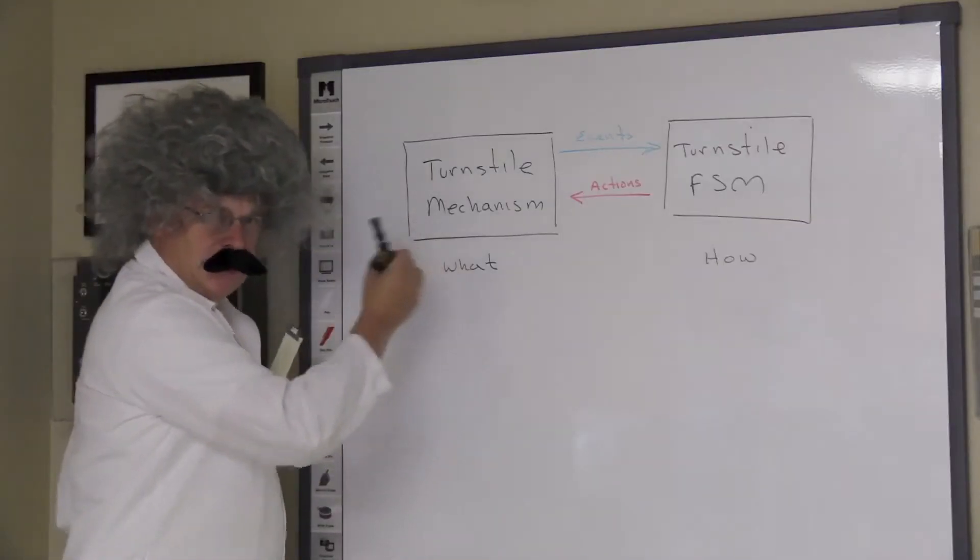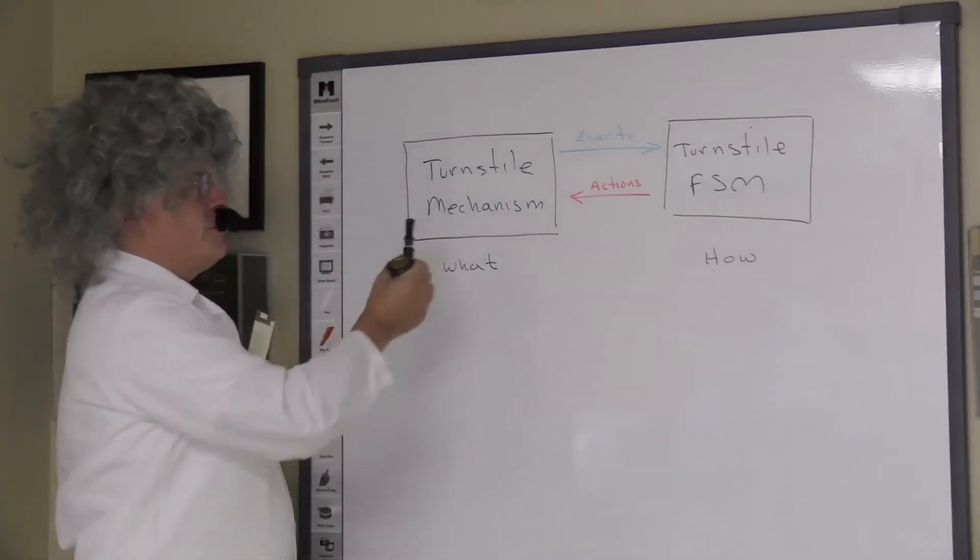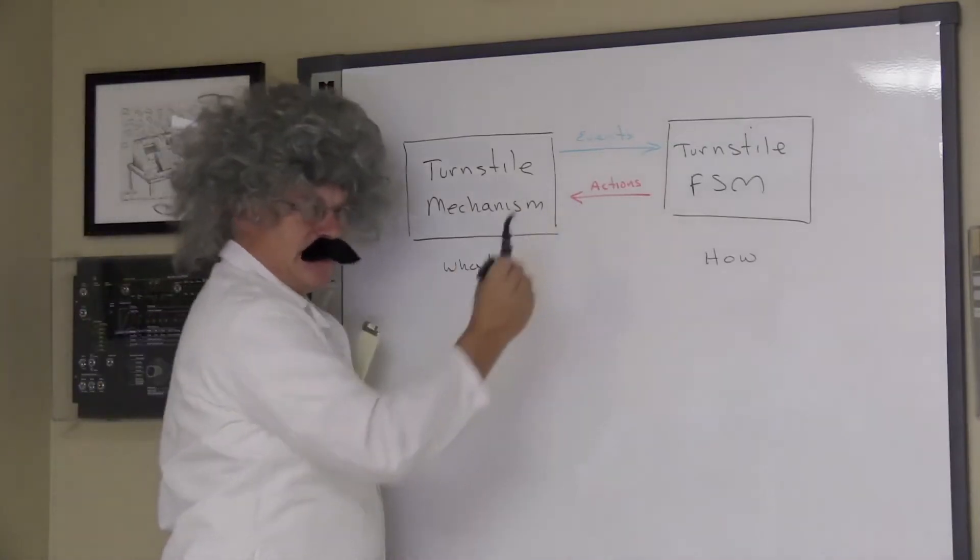The Turnstile mechanism produces events. Finite state machines that are implemented as nested switch case statements rapidly become very complicated.